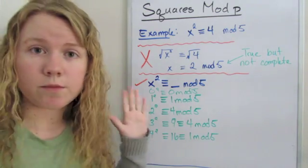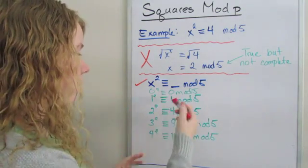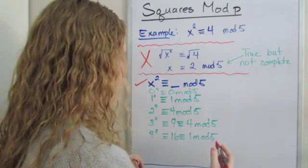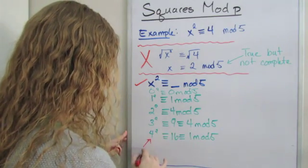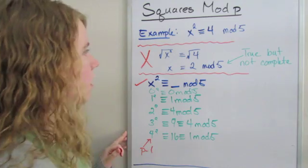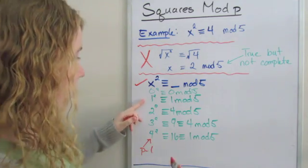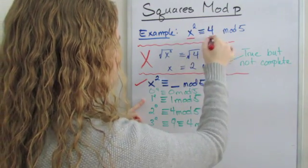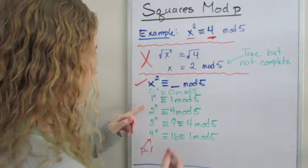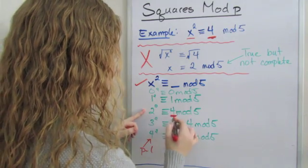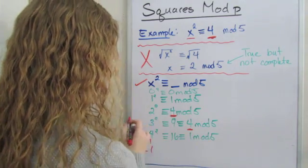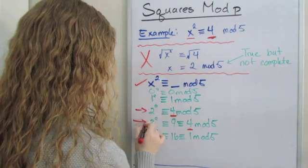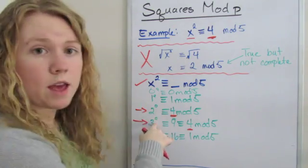So what I've done here is I've put in everything from 0 to p minus 1. And what I'm looking for is where is x² congruent to 4. And I see that right here it's congruent to 4 and right here it's congruent to 4. So therefore, these two values, 2 and 3,